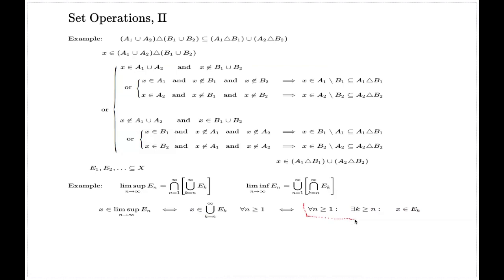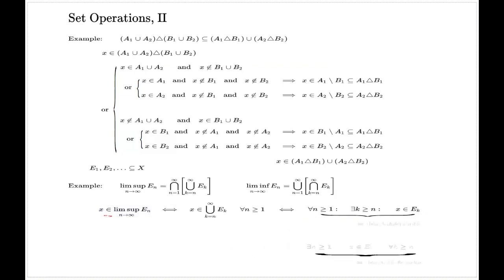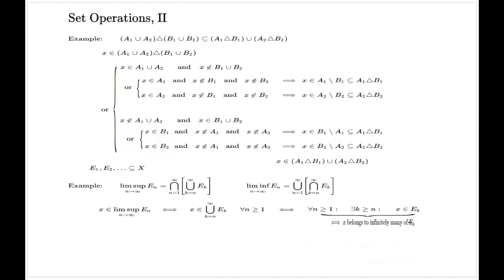Looking at this statement closely, in plain language it means that X belongs to infinitely many representatives of the sequence E_k. That's something to remember: lim-sup is a collection of all elements of this sequence of sets which appear in infinitely many of them. No matter how high you take n, there will be some k beyond n for which X is a member of E_k.